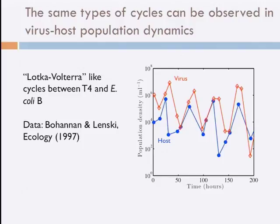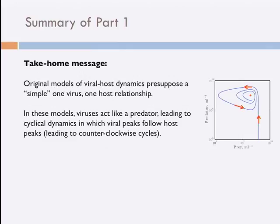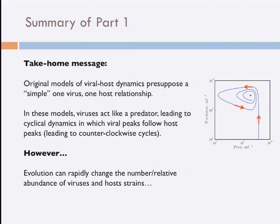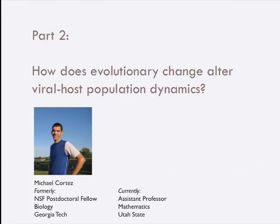I'm going to stop there in terms of background and use that as my segue to the question of evolution. At least intellectually, from a theoretical perspective, one expects Lotka-Volterra-like dynamics when considering the effect of virus infections on microbial hosts — the signature of which are these counter-clockwise cycles when thinking about the phase plane. But there's a problem we should be worried about: it's not really possible to stop evolution in these systems. We have simple models presupposing one virus and one microbe, but over time we may have other types with different phenotypic characteristics — and we've known that since the 1940s from Luria and Delbruck.